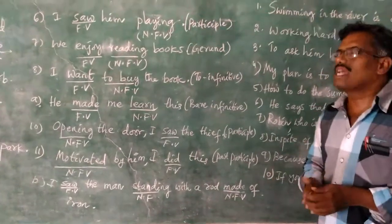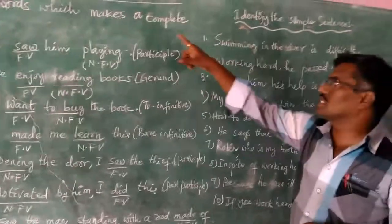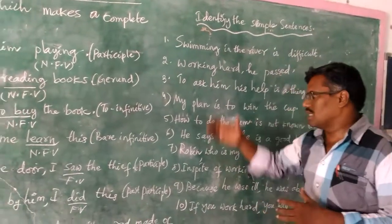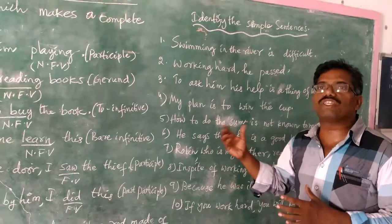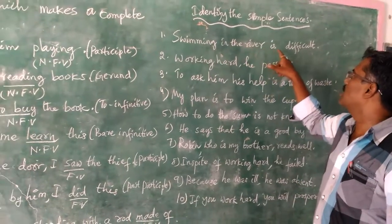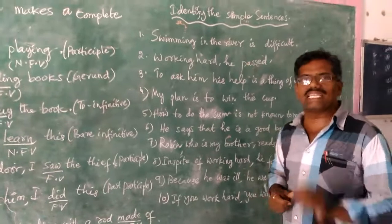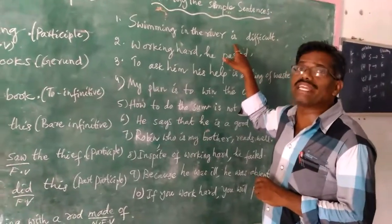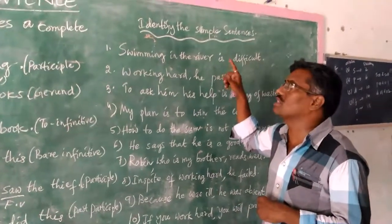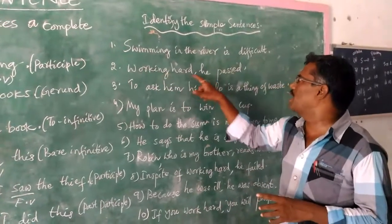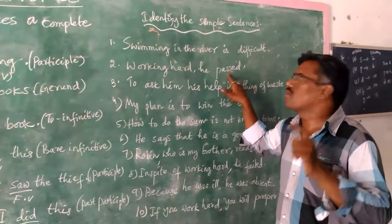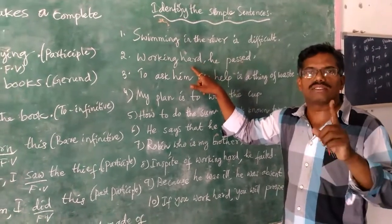Let us have a glance at the test items about this concept of simple sentence. Identify the simple sentences. First: 'Swimming in the air is difficult.' Here, 'is' is a finite verb and 'swimming' is a non-finite verb. Only one finite verb is there, so it is also called a simple sentence. Second: 'Working hard, he passed.' Here, 'working' is a non-finite verb whereas 'passed' is the only finite verb, so this is also called a simple sentence.